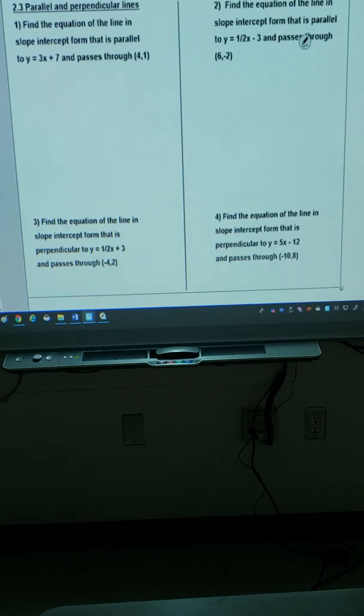Now our final objective on this module 2 is 2.3, which is parallel and perpendicular lines. Now for my class we actually split this up into two lessons, focused on parallel lines one lesson and perpendicular lines the second lesson.